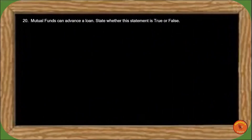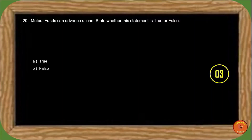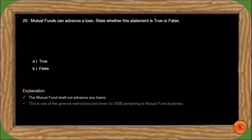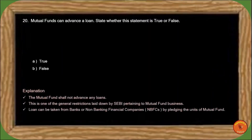Next question: Mutual funds can advance a loan — state whether this statement is true or false. Mutual funds never give any loan; this is a general restriction under SEBI regulations. Mutual fund units can be pledged to obtain loans from non-banking financial companies or banks. So the correct answer is option B, false.